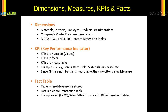So AKKO, AKPO, VBAK, VBAP, VBRK, VBRP, and the delivery tables — all those are fact tables. So to summarize: dimensions are master data, KPIs are the measurable data which are the transaction data, and fact tables are the tables which store the transaction data. We always do joins or unions of the dimensions and the facts to arrive at a KPI.